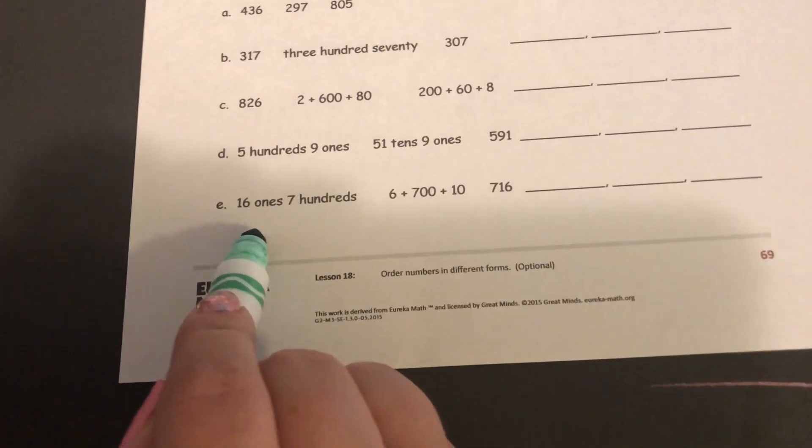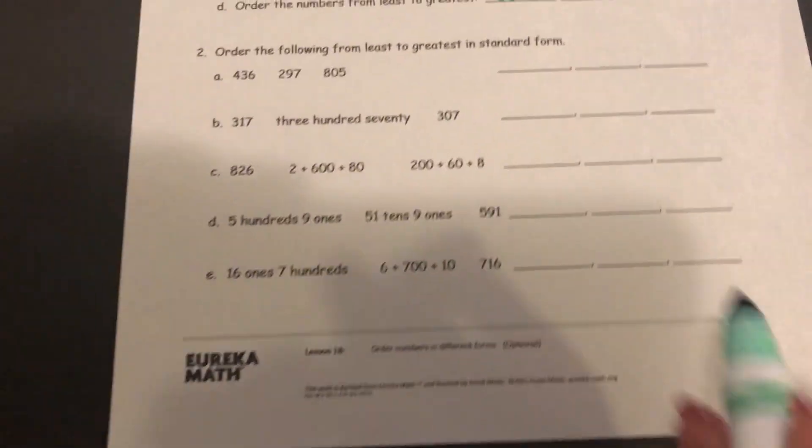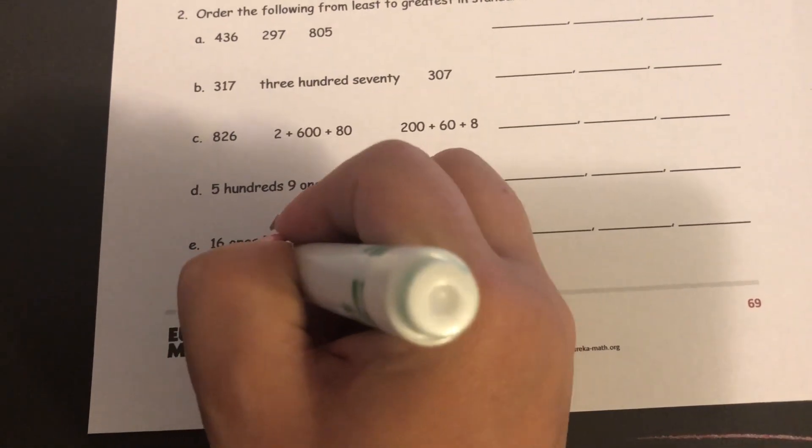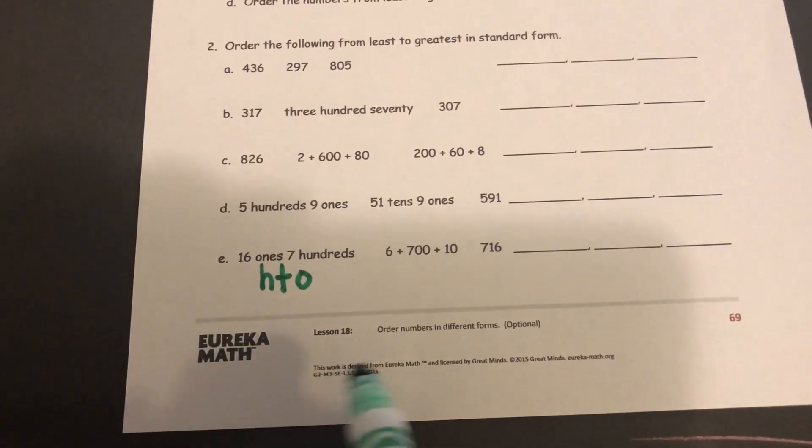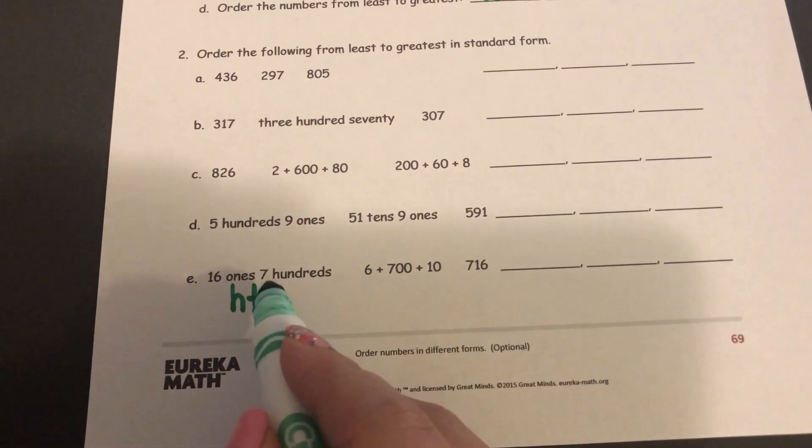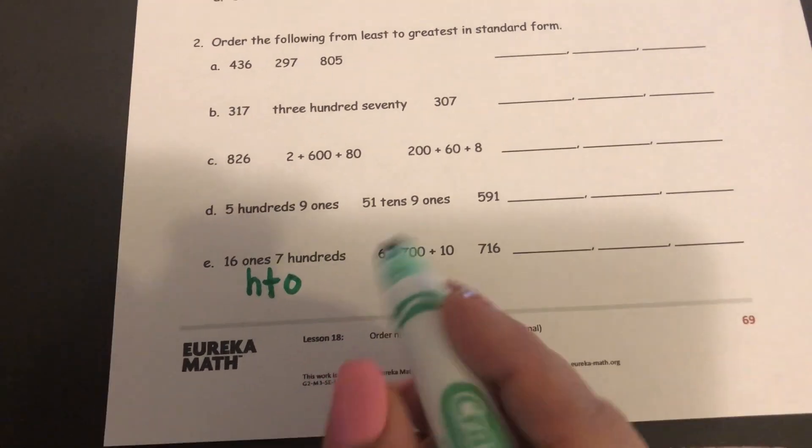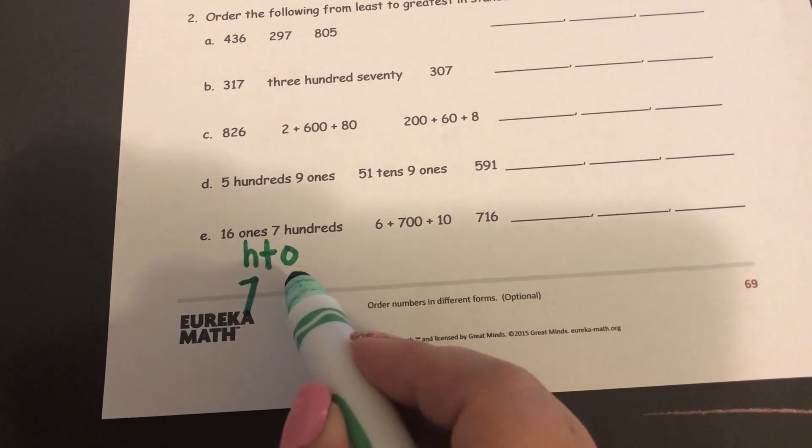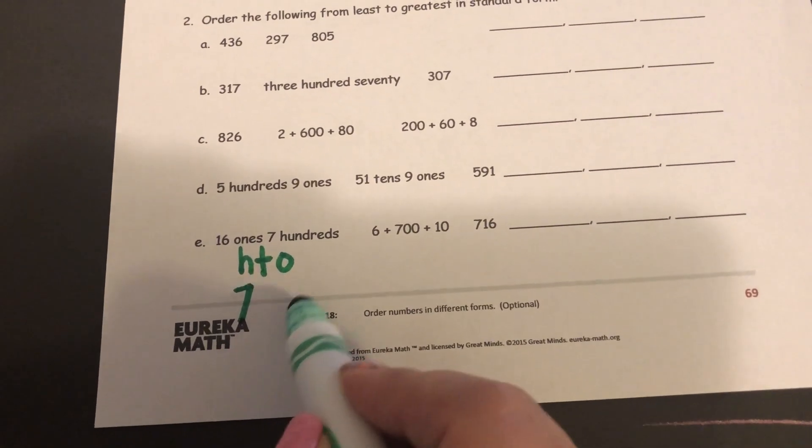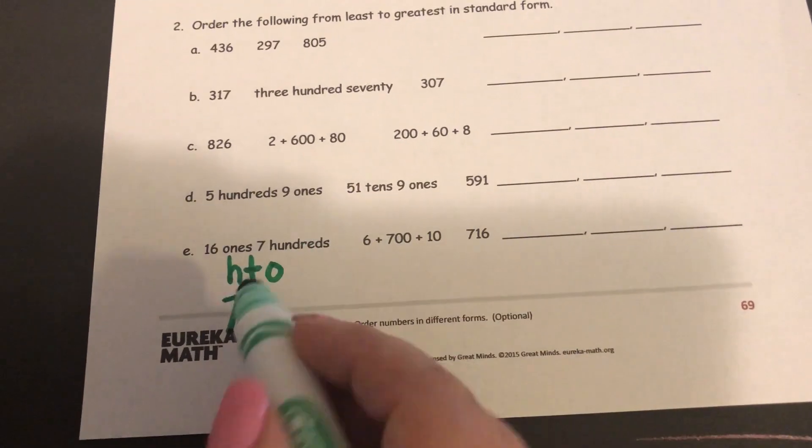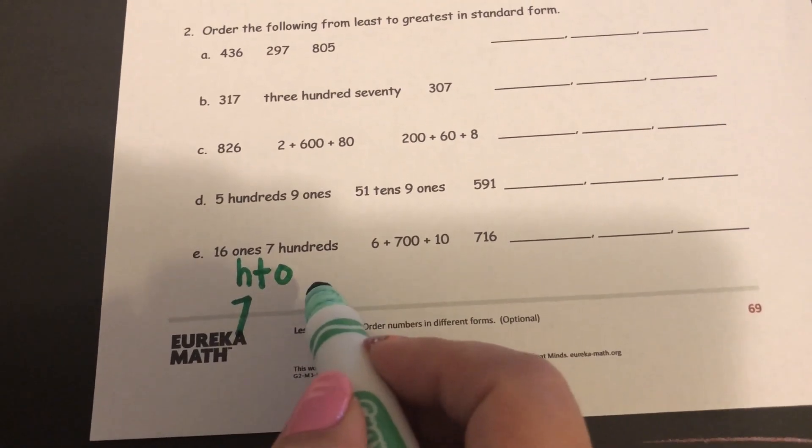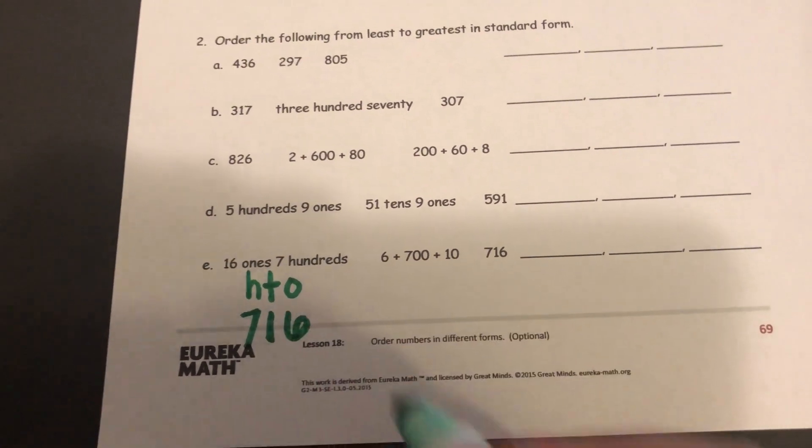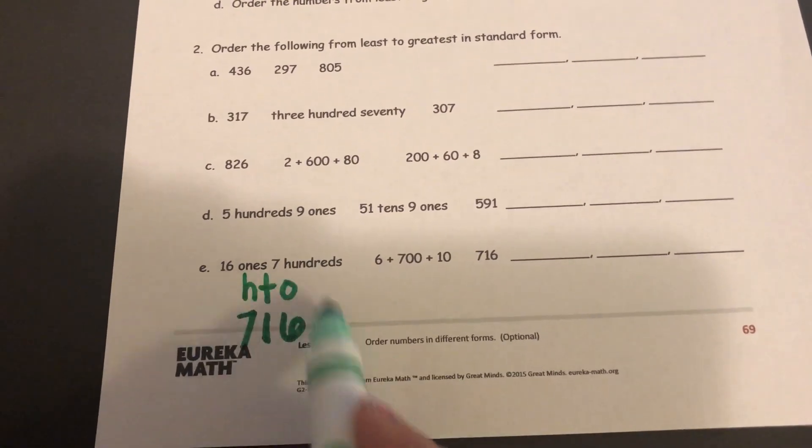So 16 ones in the ones column, so I know that 16 ones is the same thing as 1 10 and 6 ones. Well, I can't put both digits of a 16 in the ones column, so I know that 16 ones is the same thing as 1 10 and 6 ones. So this number is 716.